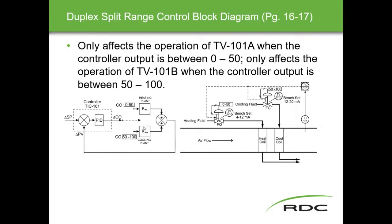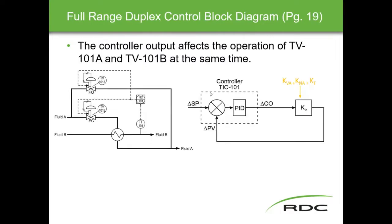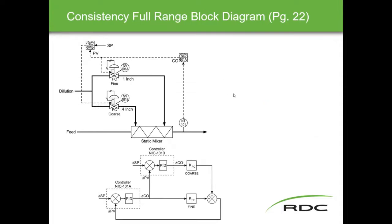For the consistency block diagram, we have consistency controller 101A and consistency controller 101B. The signal coming out of 101A feeds into 101B, where 101A drives one valve and 101B drives the other. This represents the coarse dynamics and fine dynamics for the consistency control system.